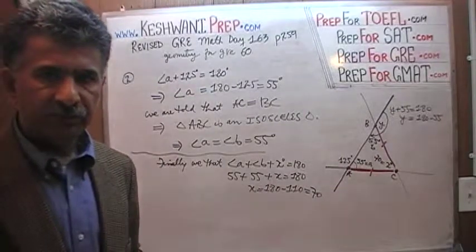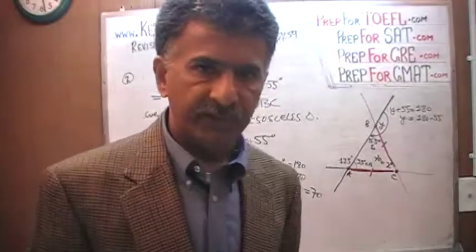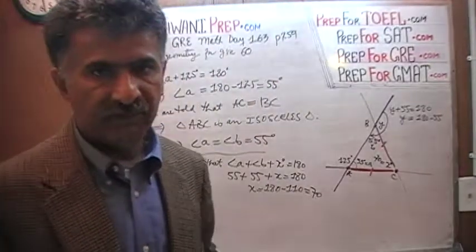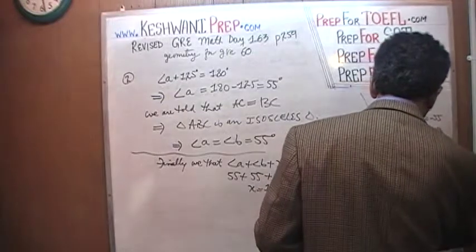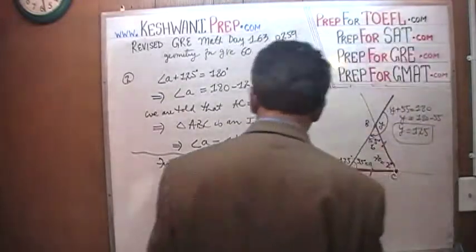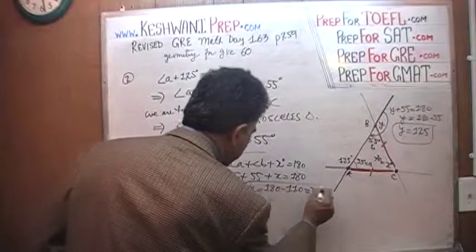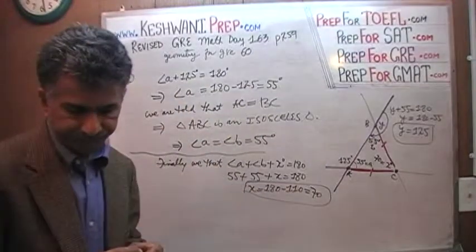Therefore 180 minus 55, which is 5 less than that, must be 125. So there is your Y and here is your X. That's it, we're done, that's what there was.